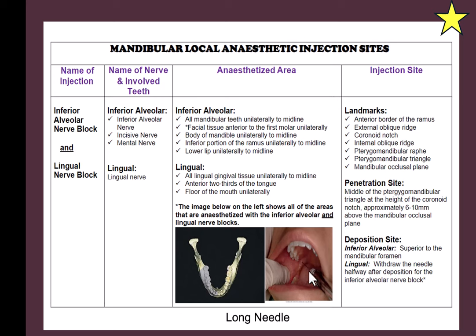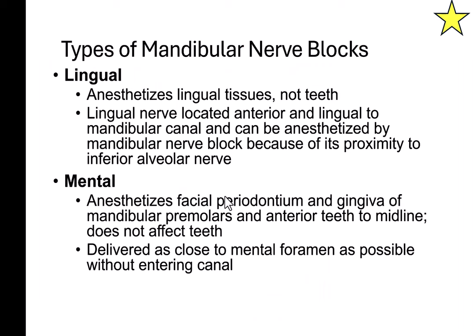In more detail: when you penetrate to the inferior alveolar nerve, deposit some solution, then withdraw halfway to reach the lingual nerve and deposit more anesthetic. This numbs the lingual tissues as well. The patient will feel the lower lip, gums, and all the teeth in that quadrant go numb. If doing a lingual nerve block alone, only the lingual tissues are numbed — the teeth require the inferior alveolar block.